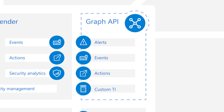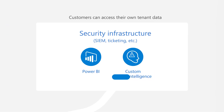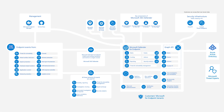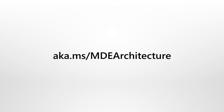Customers can also integrate Defender for Endpoint with existing security infrastructures by using a rich set of APIs — for example, connecting their SIEM or ticketing systems to the service, or enabling their own custom security workflows. Customers can even add their own threat intelligence using the API or the console itself. Key architectural components are the Microsoft 365 Defender portal, endpoint sensors, and customers' isolated and secure Defender for Endpoint tenants. To learn more about the service's architecture, see the documentation on Microsoft Docs.